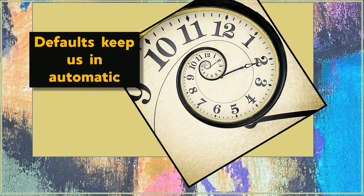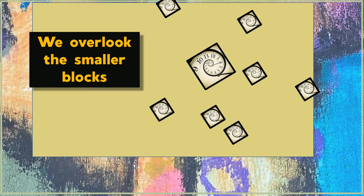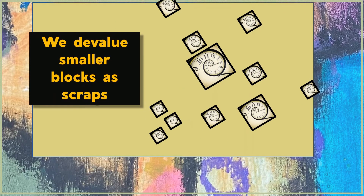Defaults keep us in automatic — we look in one direction, we're guided in that direction, but what's not in that direction, we tend to overlook. And what we're going to overlook is the smaller bits of time, the smaller chunks of time. We don't know to look for small blocks of time. We don't look for them, or maybe we can't see them because the default blinds us, or we just don't take these small units of time seriously. They're not a real thing — they're the scraps, the excess off to the side.